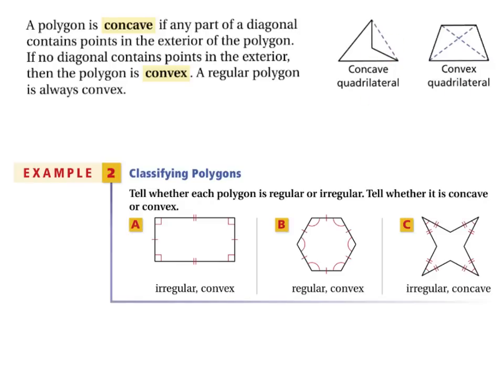In Example 2, classifying polygons: A would be irregular and convex. B is regular because all the angles and all the sides are the same, and it would also be convex. C is irregular because all of the angles are not congruent — this angle is not congruent to the others, and some angles here are going to be over 180 degrees. All of the sides are congruent, however. It's irregular and concave.